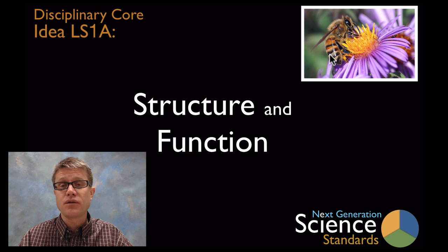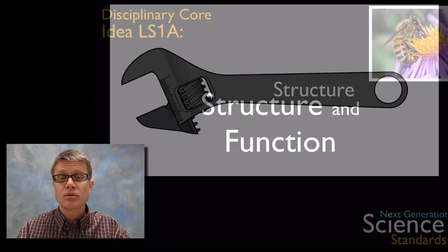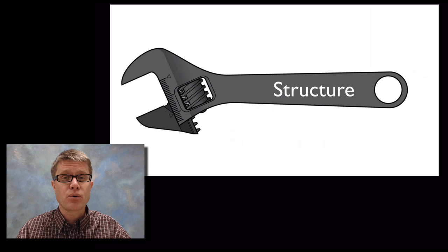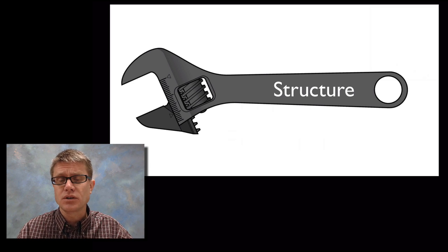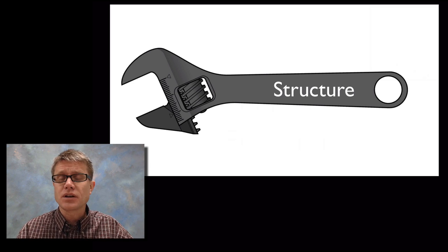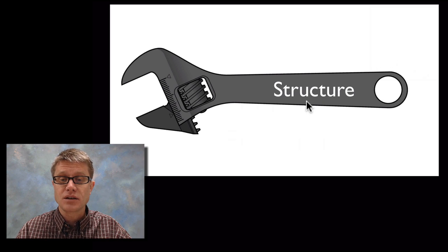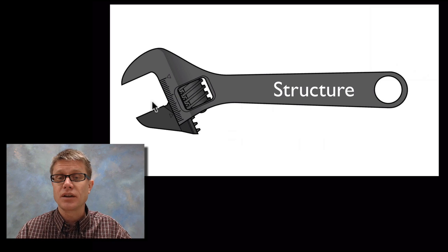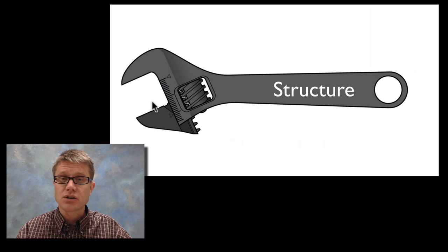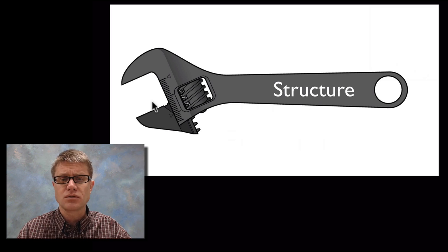In other words, in nature how does the form that an organism has fit its function? And so when we're talking about structure and function it's important that your students understand the difference between the two. Structure is the physical appearance that you have. And so for example in this wrench it has a number of different structures. And so it's got this long arm. It's got this adjustable spanner. So I can spin this on this side and then this spanner is going to move on that side. These are all structures. It's made of metal. It's very hard. These are all structures that this wrench has.